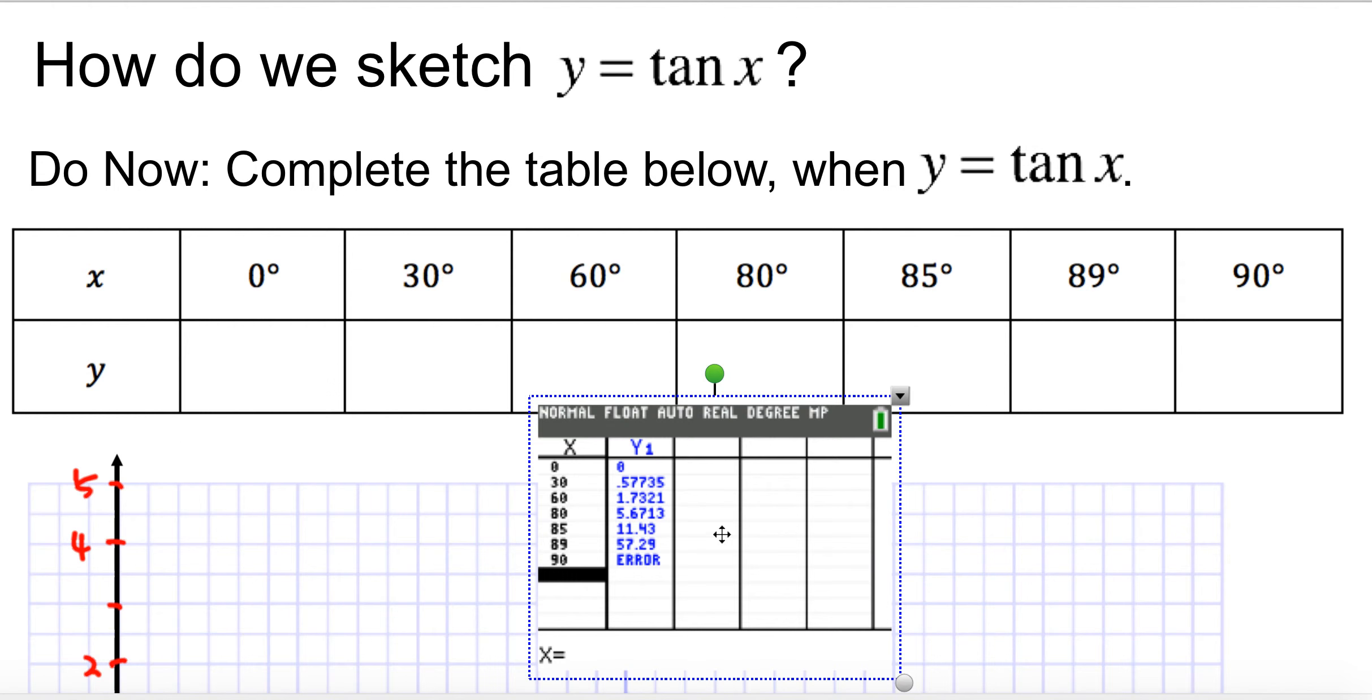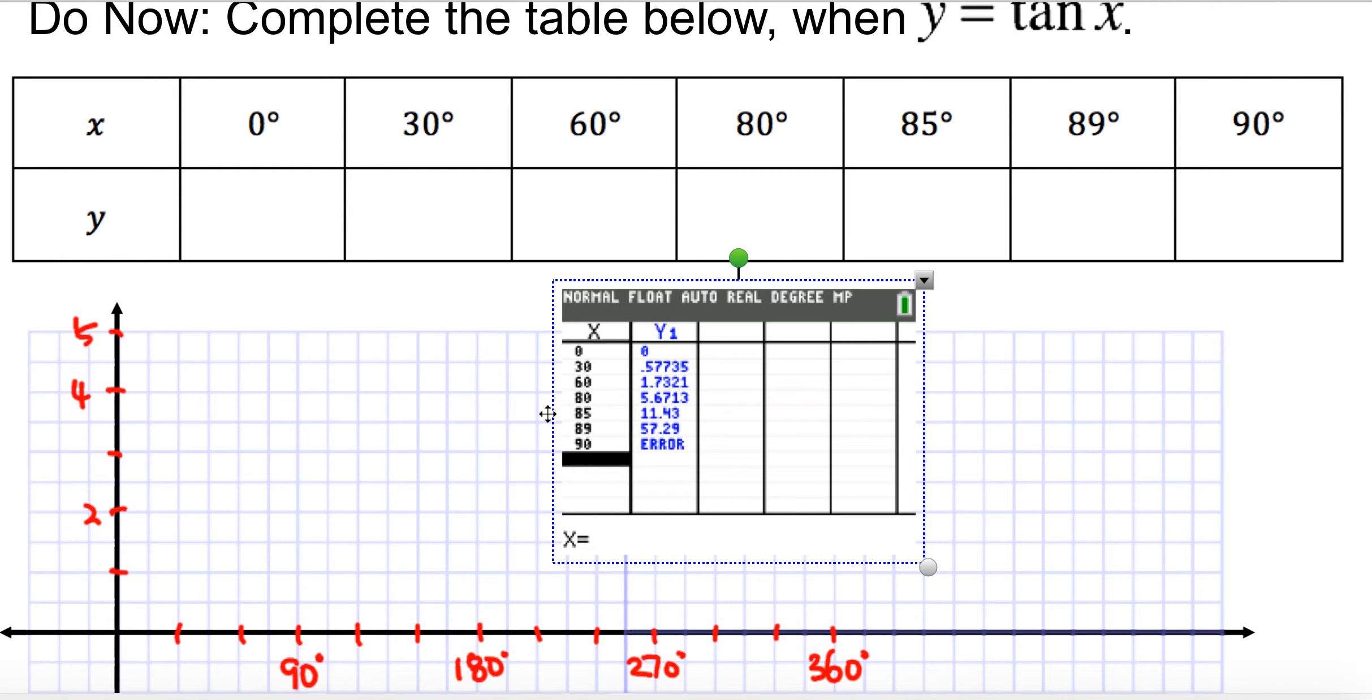So in fact, what I'm going to do is this. I'm going to just copy these values down here. 0, 0.58, 5.67, 11.43. Oh, I forgot the one value here in between. Sorry about that. And then 1.73, and then 5.67, 11.43, 57.29. And then it says undefined, that's why it says error.